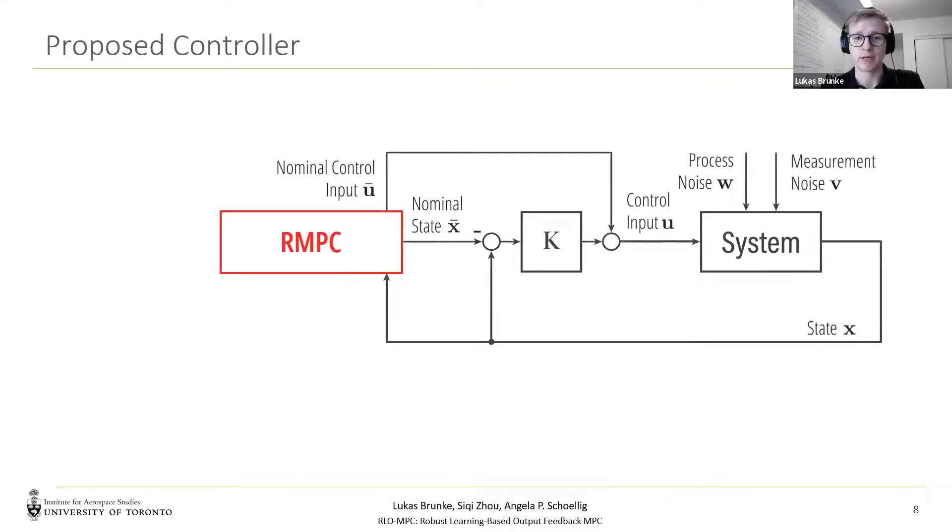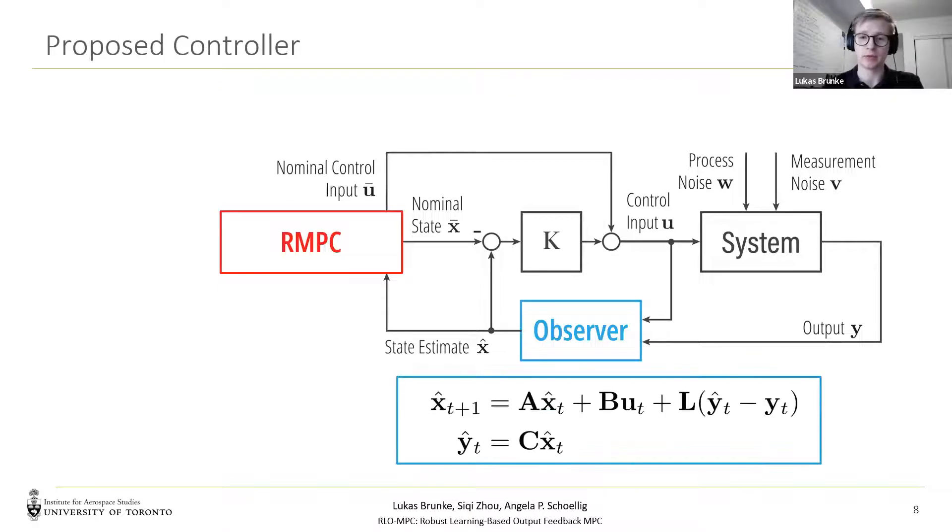Now we also want to deal with measurement noise and the case of output feedback instead of state feedback. In order to still apply our robust MPC, we need an observer to estimate our state. In this work, we consider a Luenberger observer. And combining this with our robust MPC yields a robust output feedback MPC.